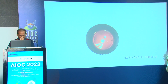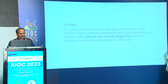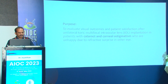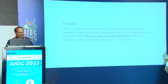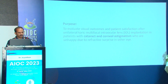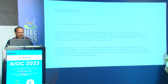The purpose of the study is to evaluate the visual outcome and patient satisfaction after unilateral toric multifocal intraocular lens implantation in patients with cataract and corneal astigmatism who are unhappy due to a refractive surprise in the other eye, which has already been operated.